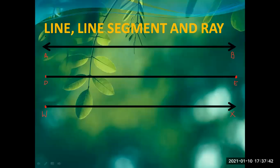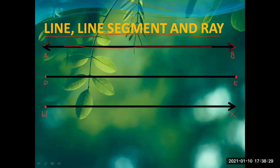Now we are going to discuss line, line segment, and ray. A line has no end points — it extends infinitely in both directions. One more important point about a line is that you cannot draw the whole picture of a line on paper. As you can see, there are two arrow marks here, which show that this line does not stop at any point. It keeps going in both directions.